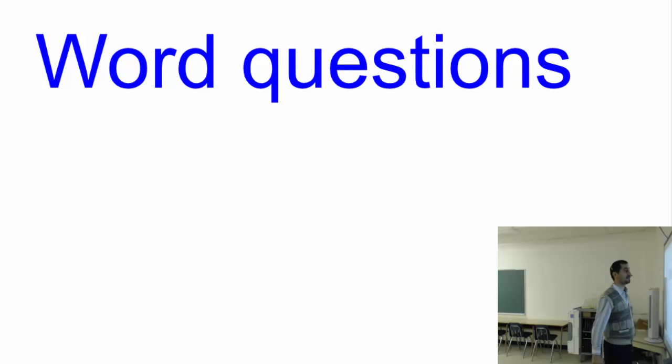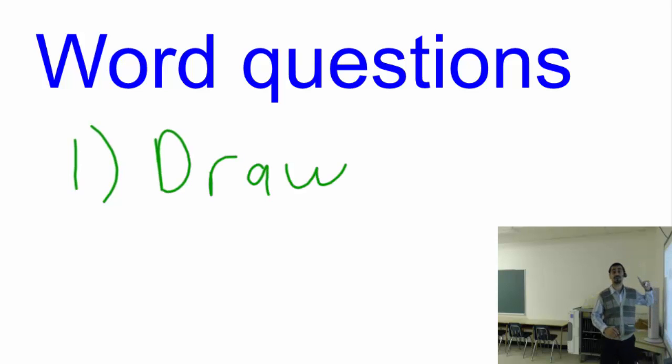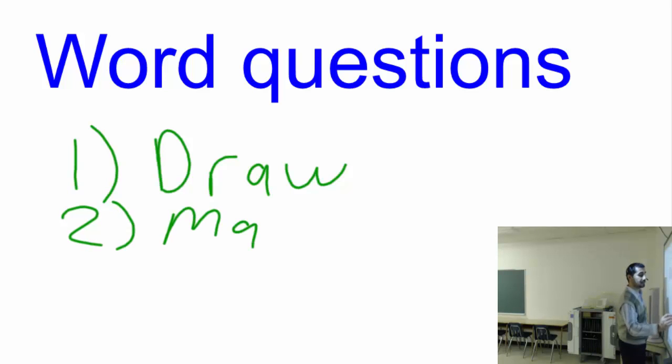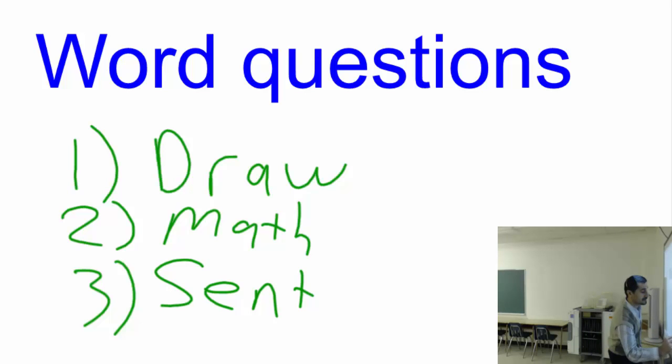All right, so the last one, word questions. How do we do the word questions? I'm looking for three things. Number one, you need to draw about the situation, whatever the situation is, just picture something about it. Number two, do the math. Number three, the last is the sentence. So whatever the word question is asking you, using the question words, give me a sentence. That will be good enough.